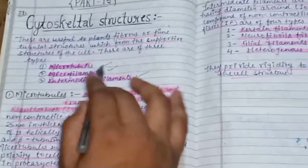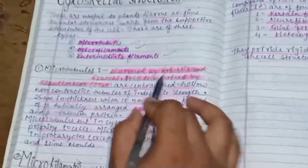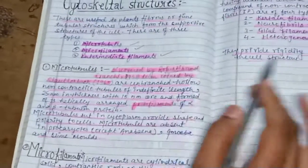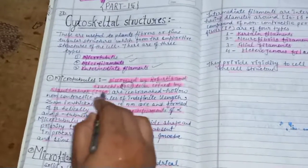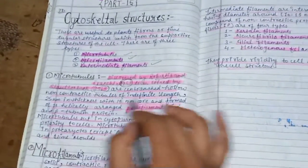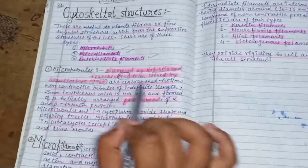Microtubules were discovered by Roberts and Francis in 1953, and the term was given by Slottenback in 1963. They are branched, hollow, and non-contractile tubules of indefinite length, 55 nanometers in thickness, with a 50 nanometer core.